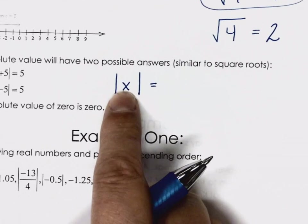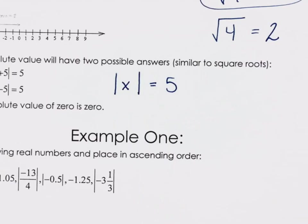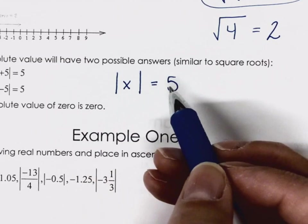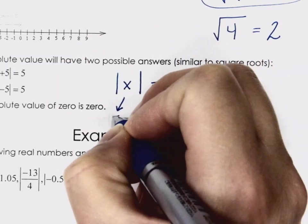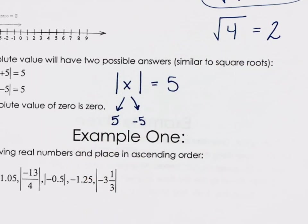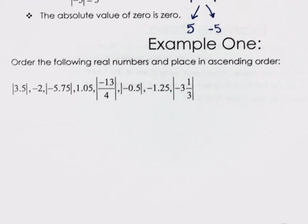Same sort of thing with absolute value brackets: if the absolute value expression equals five, we might think that's just five inside. But this could have two answers — it could be positive five or negative five. We'll get into solving absolute value equations a little bit later. For right now we're just going to play with some absolute value brackets.